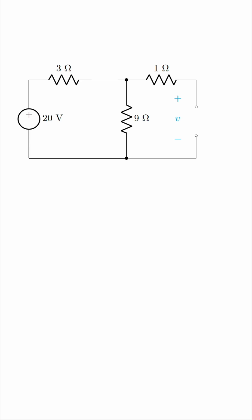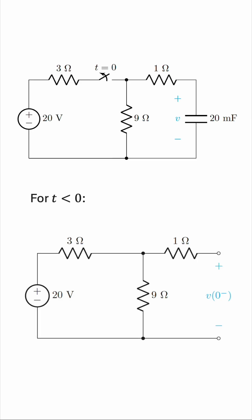So, for t less than zero, we have this charging circuit, where we have the voltage source feeding this network, and we want to find the voltage across the capacitor. But this is not V in general, this is V of zero minus, meaning the voltage across the capacitor just before the switch is flicked open.